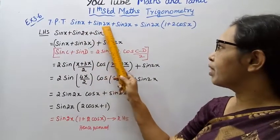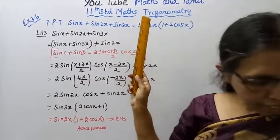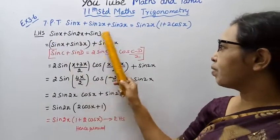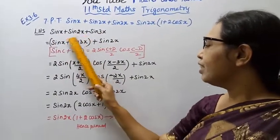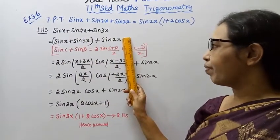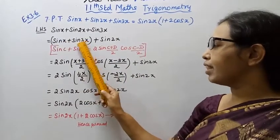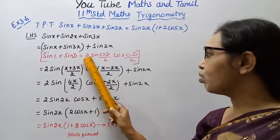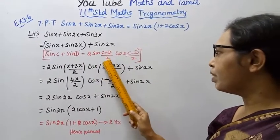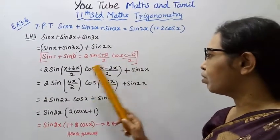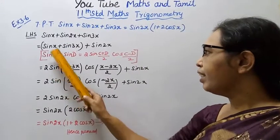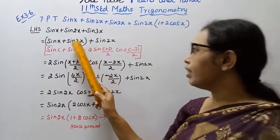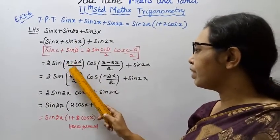Left hand side: sin x plus sin 2x plus sin 3x. Let's rearrange this. Sin x plus sin 3x first, then sin 2x last. Now we use the identity sin C plus sin D equals 2 sin C plus D by 2 cos C minus D by 2.